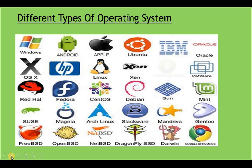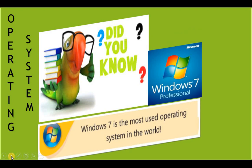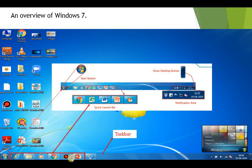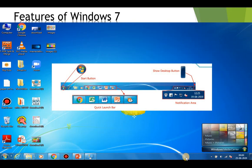Do you know that Windows 7 is the most used operating system in the world? Before we discuss the features of Windows 7, let's have an overview. This is the Start button, this is the taskbar, this is the Quick Launch bar, this is the Show Desktop button, and this is the notification area. Let's discuss these features of Windows 7 one by one.